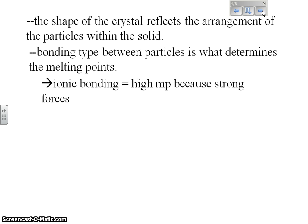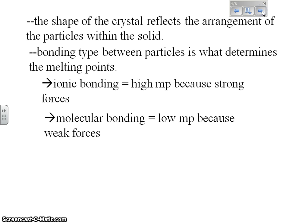In ionic bonding, we have high melting point because of the strong forces that hold them together. As you recall from chemistry A, ionic bonding is the strongest of the two major bond types that we've talked about. Molecular bonding or covalent bonding has a lower melting point because those are not as strong of bonds. So the stronger the bond, the higher the energy required to break those bonds. And that makes sense.